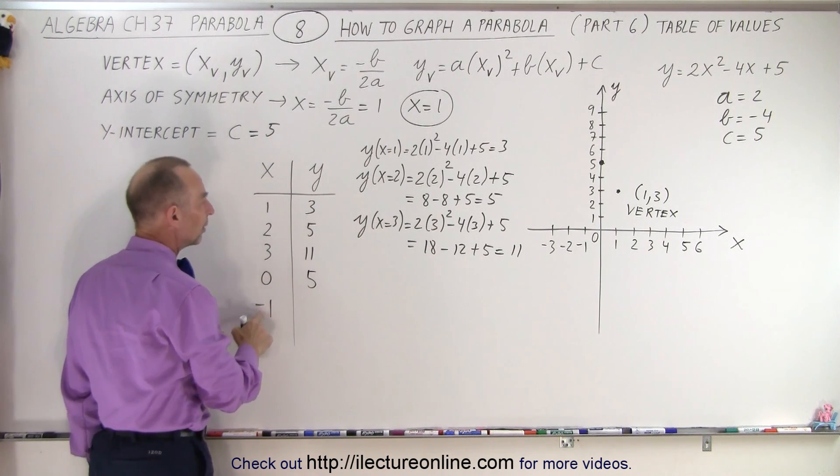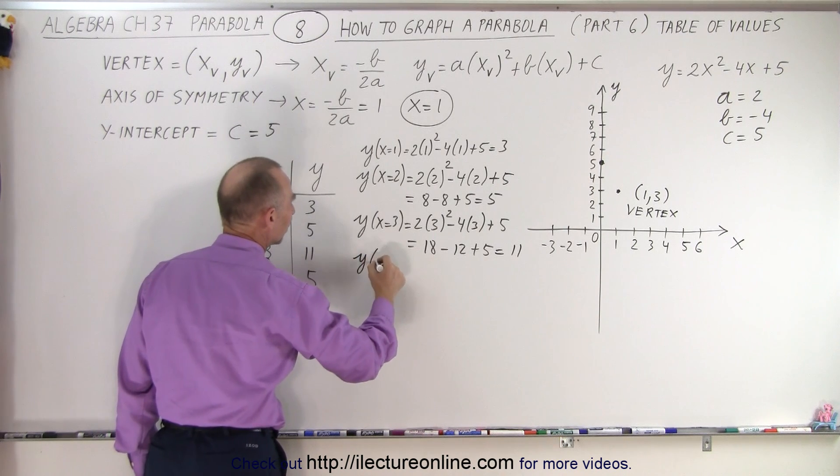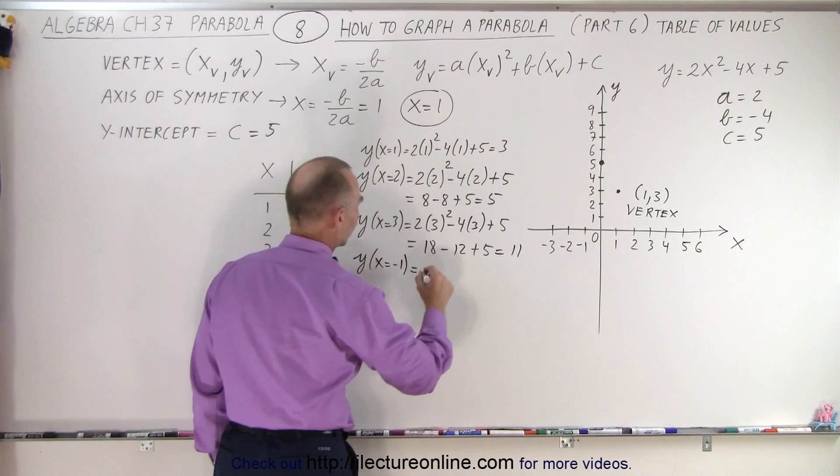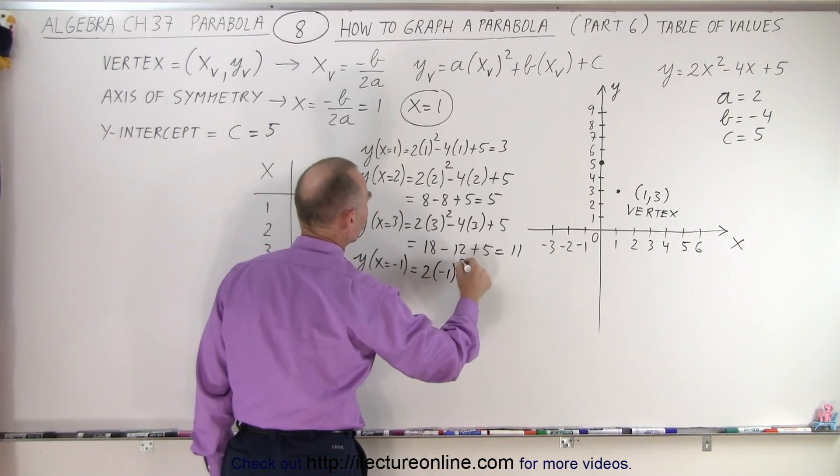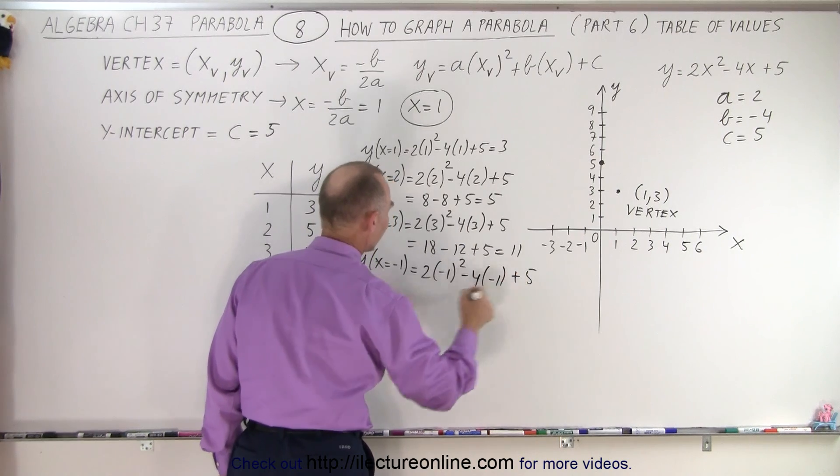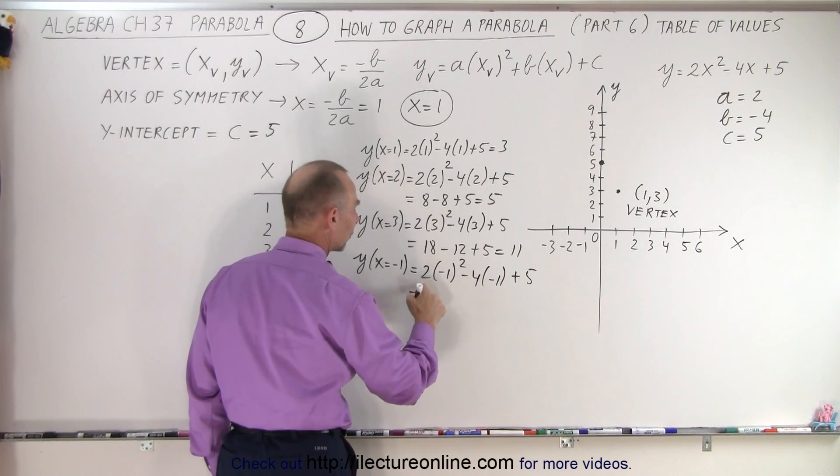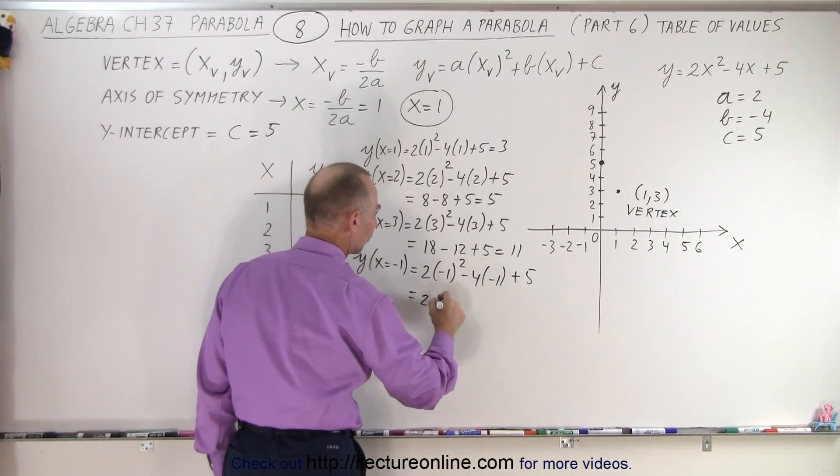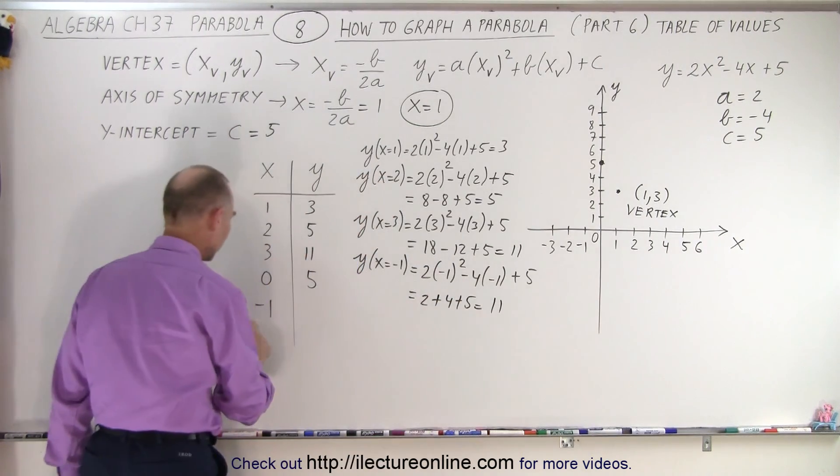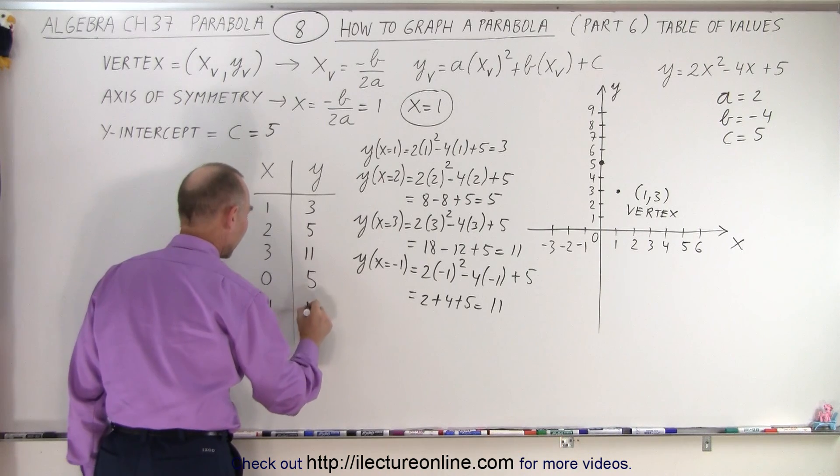And then we do one more value when x is equal to negative 1. So we have 2 times negative 1 squared minus 4 times negative 1 plus 5. This gives us 1 times 2, which is 2, plus 4, plus 5, which is equal to 11. And notice when x equals negative 1, y equals 11.